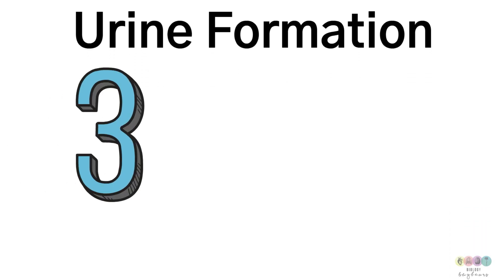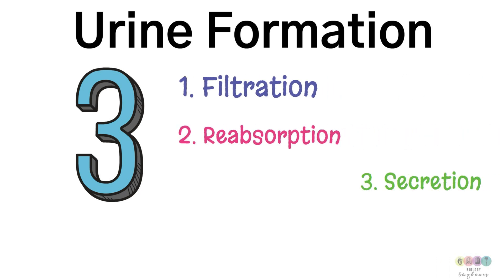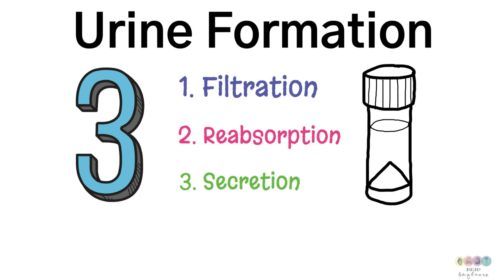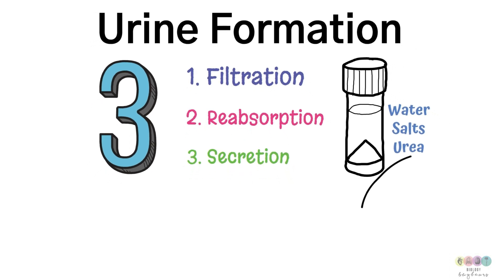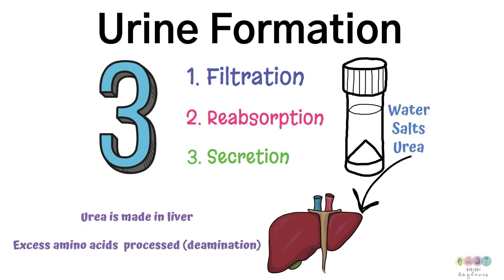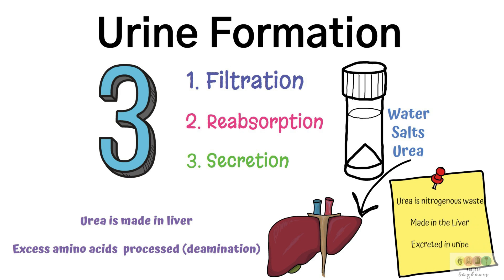There are three stages involved in urine formation: number one, filtration; number two, reabsorption; number three, secretion. At the end of these three processes, urine is formed — it's mostly water and contains salts and urea. Urea is made in the liver when excess amino acids are processed, a process called deamination. Urea is classed as nitrogenous waste — nitrogen-containing waste — made in the liver but excreted in urine.